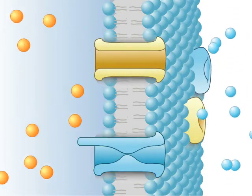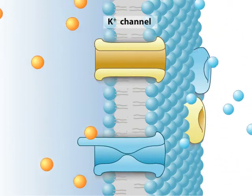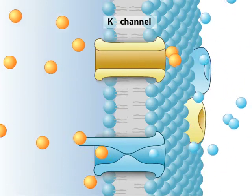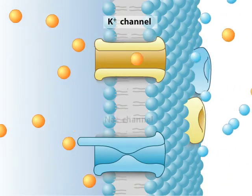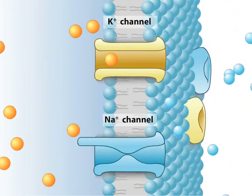When a neuron is at rest, most ion channels are closed. However, some potassium channels are open, permitting potassium ions to diffuse out of the cell down their concentration gradient. Note that sodium channels are normally closed, and thus sodium ions cannot cross the membrane when the neuron is at rest.